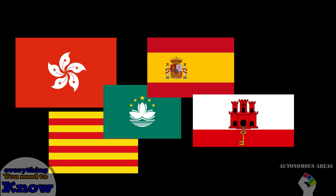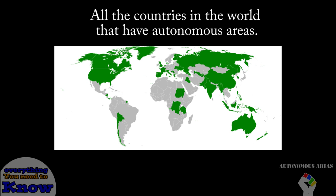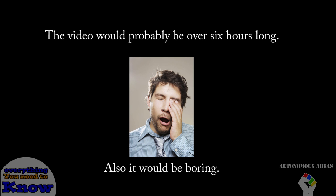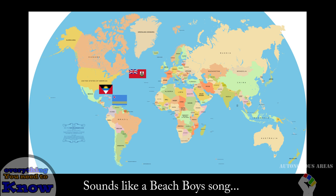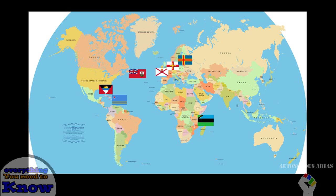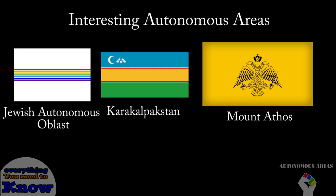Even though China does have more autonomous areas than Spain, they don't take up the entirety of the country, which I think makes Spain very unique. Since this is such a vast subject, it would be interesting to look at a few more autonomous areas around the world. Looking at each one individually would be unrealistically long since almost half of these are islands not connected to their sovereign state, such as Aruba, Bermuda, Barbuda, Zanzibar, Jersey, Guernsey, Åland, and so many more. But let's look at some interesting autonomous areas that you might not have known existed.